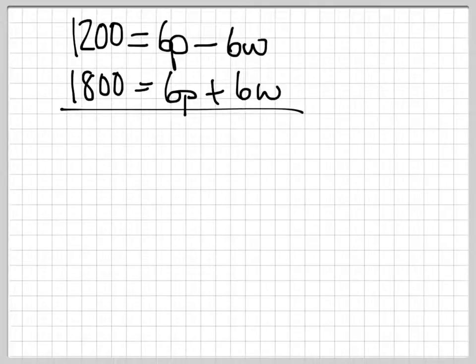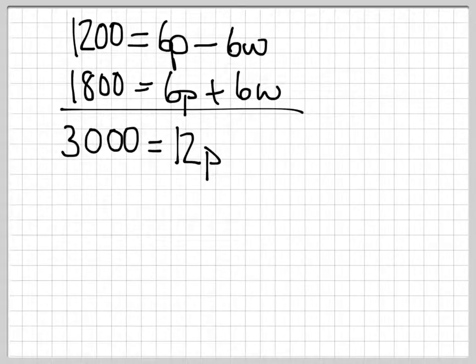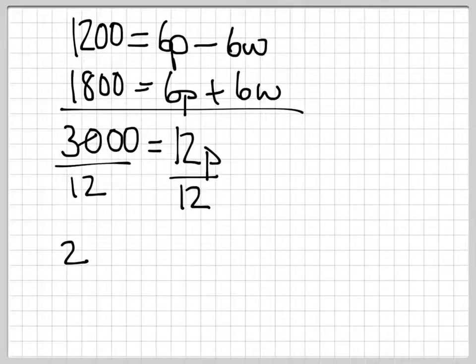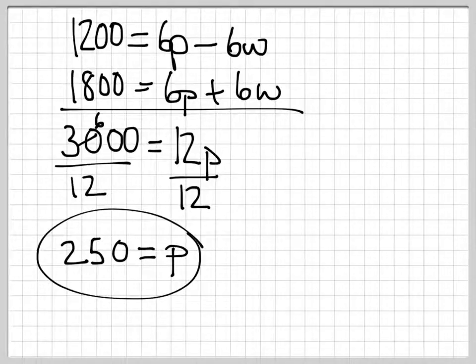When we add these two equations, we get 12p equals 3,000. So we have to divide both sides by 12. 12 goes into 32, leaving a 6. 12 goes into 65. And so p is 250. So the plane goes 250 miles per hour.